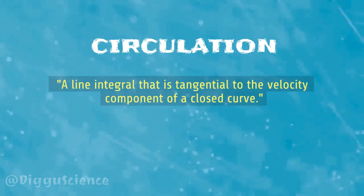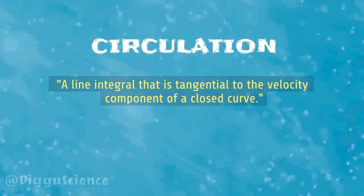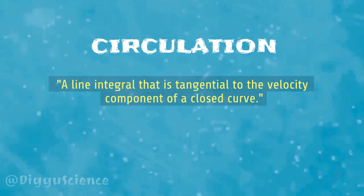Circulation can be defined as a line integral that is tangential to the velocity component of a closed curve. It is a scalar quantity, often symbolized as gamma.